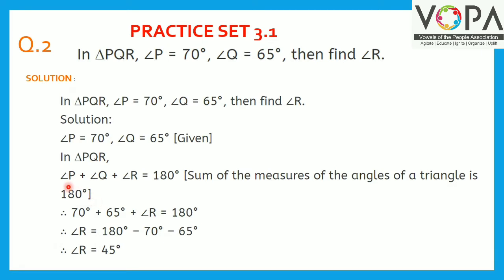Substituting the values: 70 degrees plus 65 degrees plus angle R equals 180 degrees. Therefore, angle R is equal to 180 minus 70 minus 65, which gives angle R equal to 45 degrees.